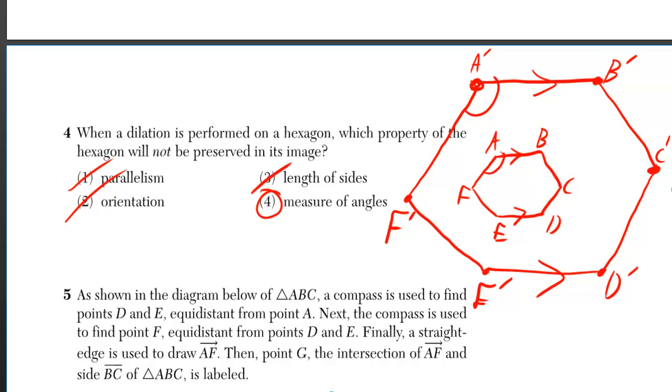Orientation, that is if I can read a, b, c, d, e, f as clockwise, then I should be able to read a prime, b prime, c prime, d prime, e prime, f prime as clockwise.